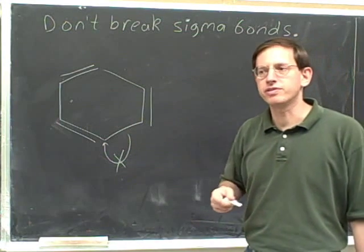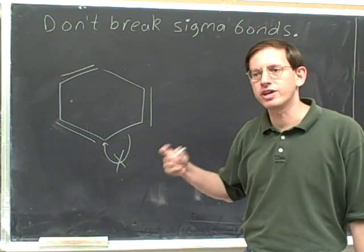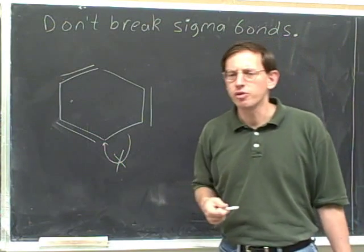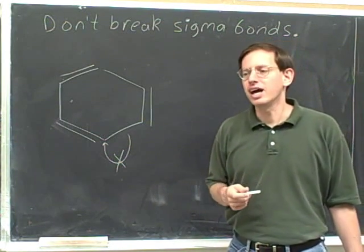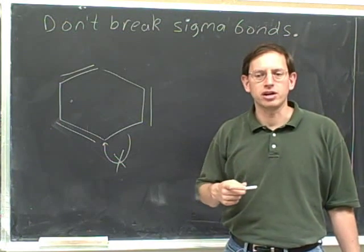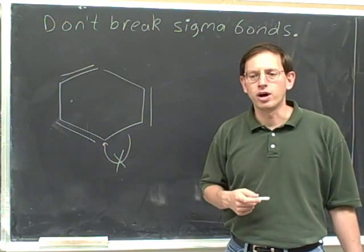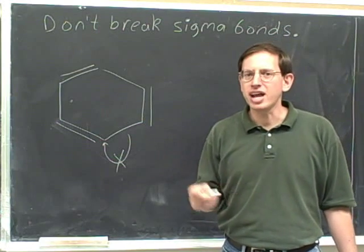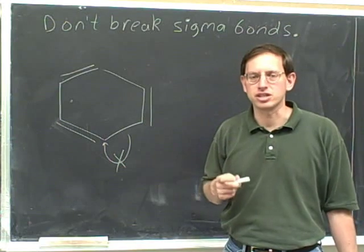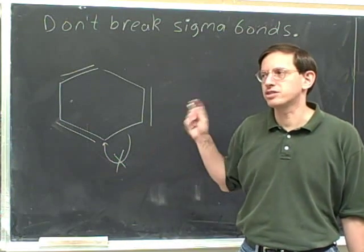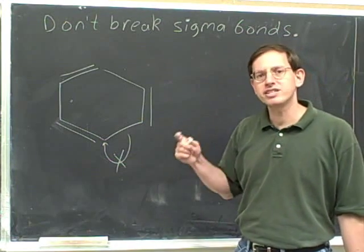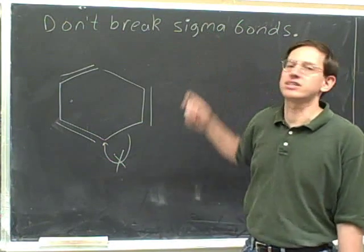This is an important difference between the electron-pushing arrows for resonance and the electron-pushing arrows for reaction mechanisms. A lot of what we're talking about is useful for reaction mechanisms too, but not everything that's true for resonance applies to reactions. Here's one big thing: when you're doing resonance, you cannot break sigma bonds.